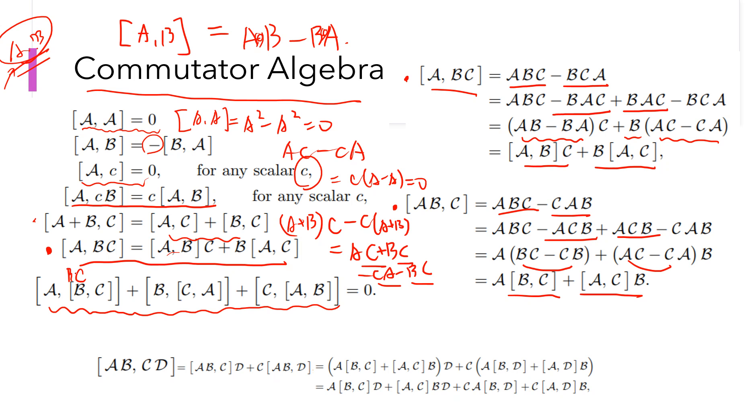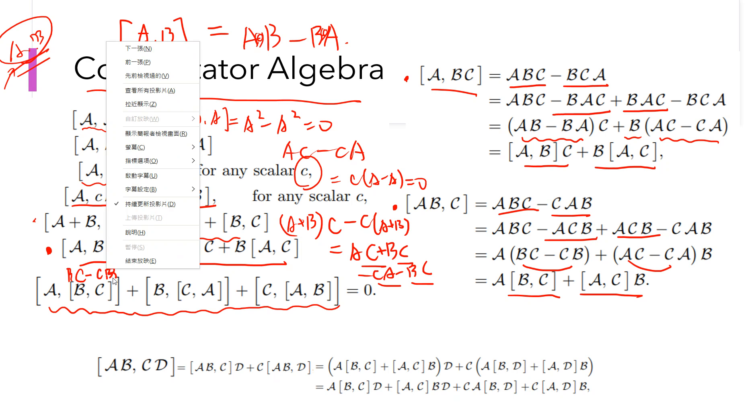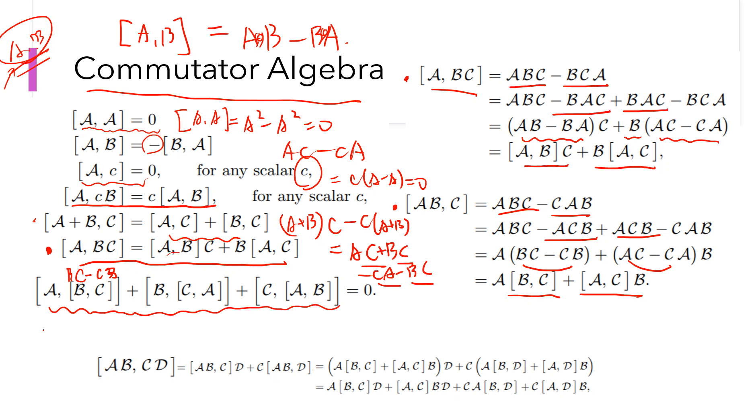So this [B, C] is B C minus C B, right? Okay. So this is A BC minus A CB, right? Plus B CA minus B AC plus C AB minus C BA. Okay.